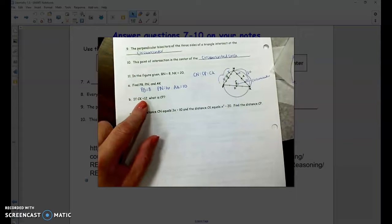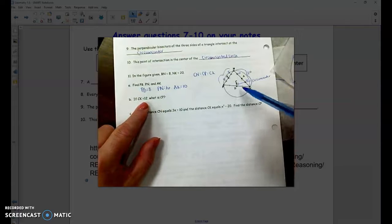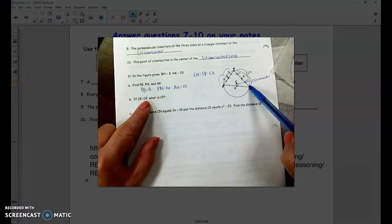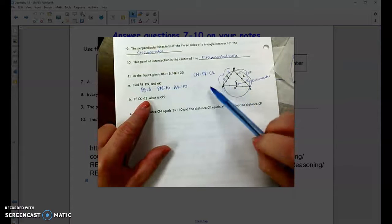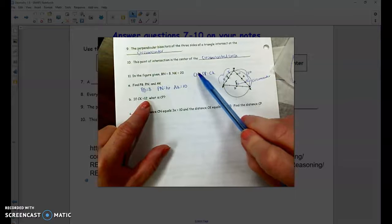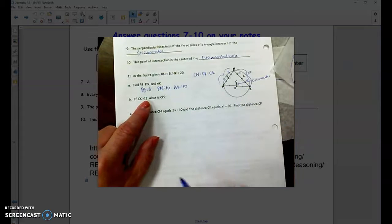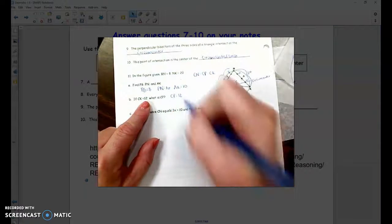Now here comes in that circumcenter. It tells me that C to K is 12, and wants to know what C to P is. Remember, C to K, C to P, and C to N are all the same length. So C to P is also 12.